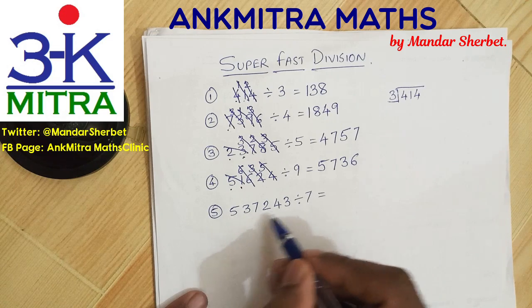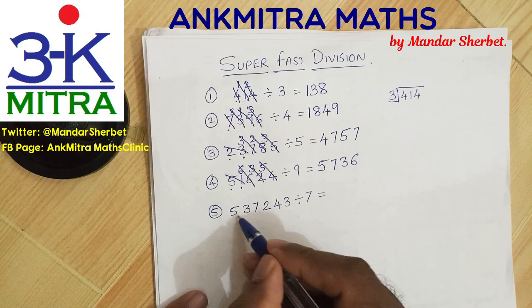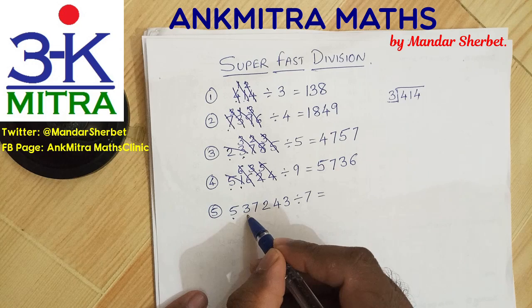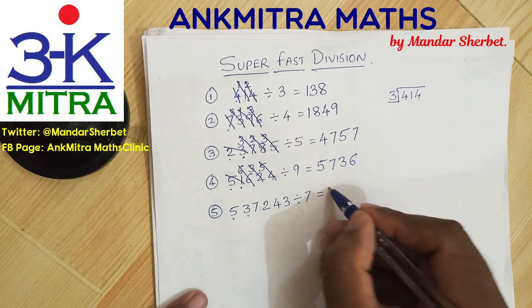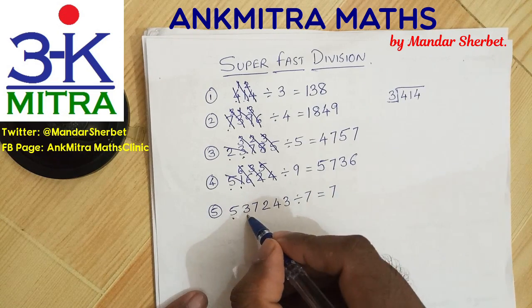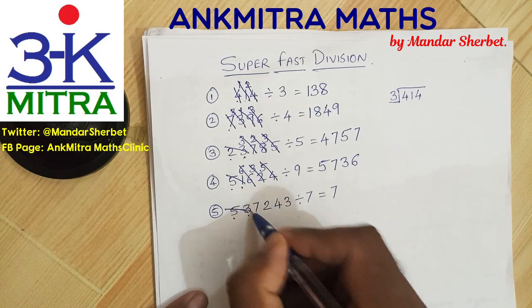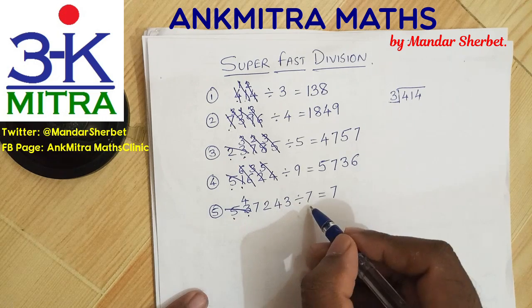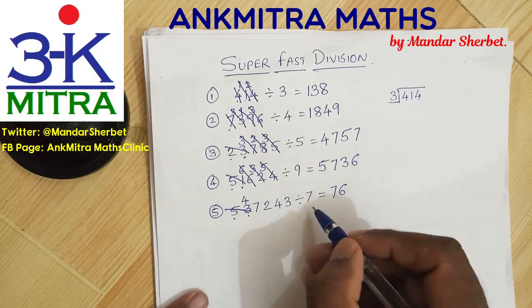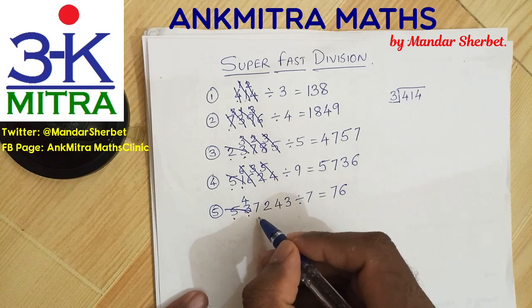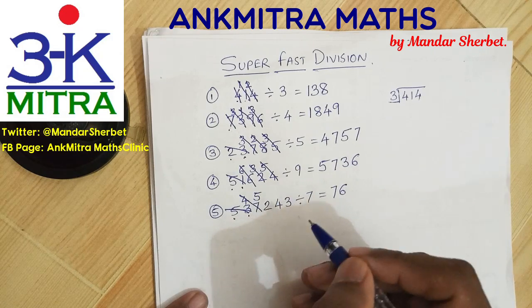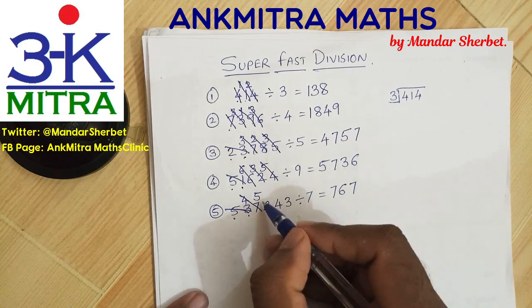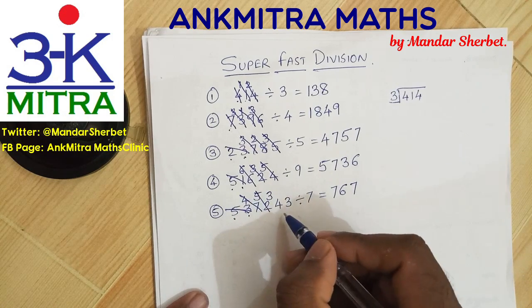The final example: a 6-digit number divided by 7. Starting from the leftmost digit — since it's smaller than the divisor, we consider the first two digits. 7 times 7 can be subtracted — we start the answer with 7. 7 times 7 is 49, subtracting from 53 leaves 4. Next number is 47 — 6 times 7 can be subtracted, write down 6. 6 times 7 is 42, subtracting leaves 5. Next number is 52 — subtracting 49 (7 times 7) leaves 3.